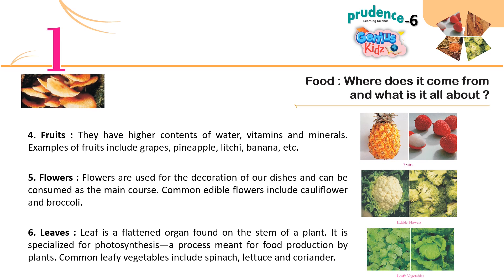Four — Fruits: They have higher contents of water, vitamins and minerals. Examples of fruits include grapes, pineapple, litchi, banana, etc. Five — Flowers: Flowers are used for decoration of our dishes and can be consumed as the main course. Common edible flowers include cauliflower and broccoli. Six — Leaves: A leaf is a flattened organ found on the stem of a plant, specialized for photosynthesis — a process meant for food production by plants. Common leafy vegetables include spinach, lettuce and coriander.